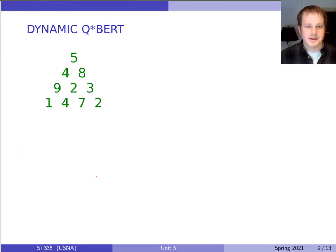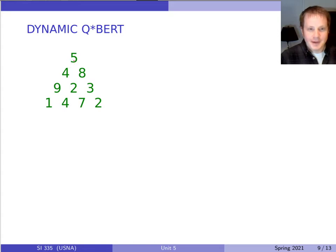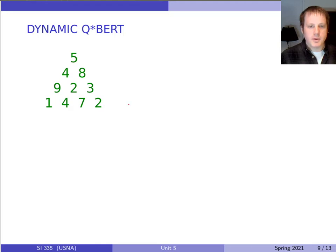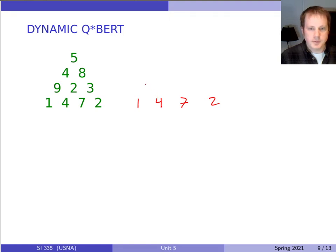Let's look at another example: the Qbert problem. This really isn't about the Qbert game, although it's a fun silly arcade game from the 80s I encourage you to look up — I found it highly frustrating. The goal, as we formulated it, was to find the highest sum from the top of the pyramid to the bottom. For the memoized way, we start at the top at five and ask: is the highest sum going down to four or down to eight? And then from four, is it better going to nine or to two? With dynamic programming, we work our way up from the bottom instead.